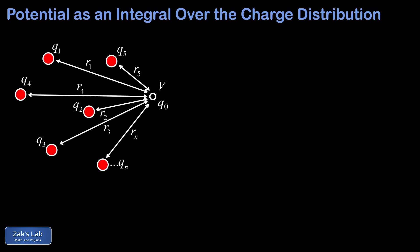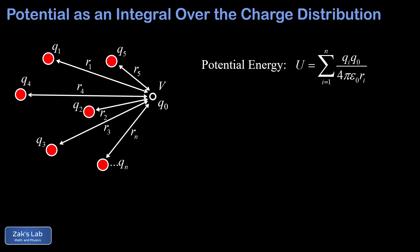Now we can extend our analysis to a collection of point charges. We have n point charges and their distances to the observation point are labeled r1, r2, and so on, all the way to rn. The potential energy contribution of bringing q-naught near all of these other charges is the sum of all individual pairwise potential energies, giving us the sum of qi·q-naught over 4πε₀ri.